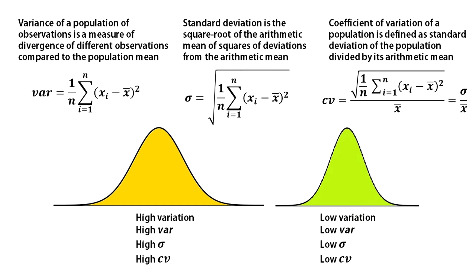Remember, all these three parameters represent the deviation of a population from its own central tendency. You can compare distributions of two populations provided here. The left one shows a comparatively higher degree of variation compared to the right one.